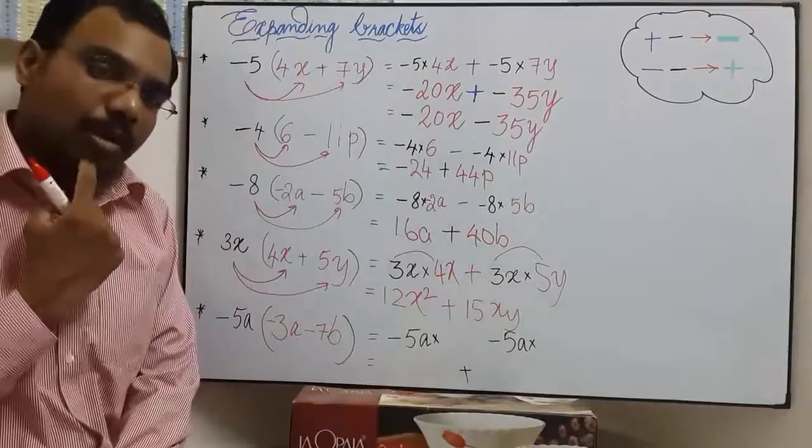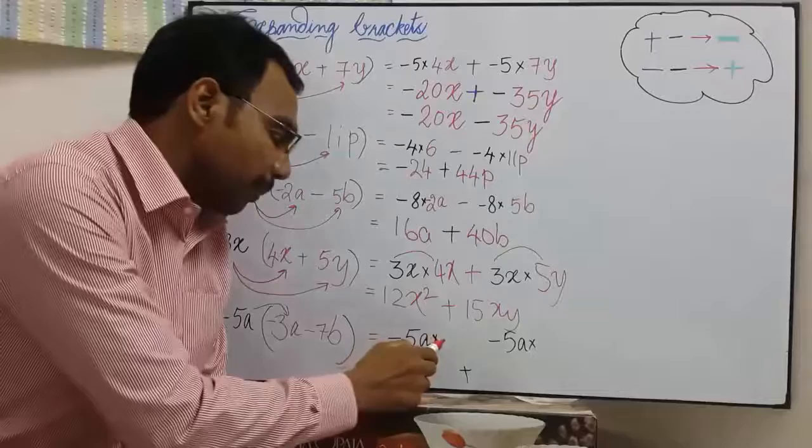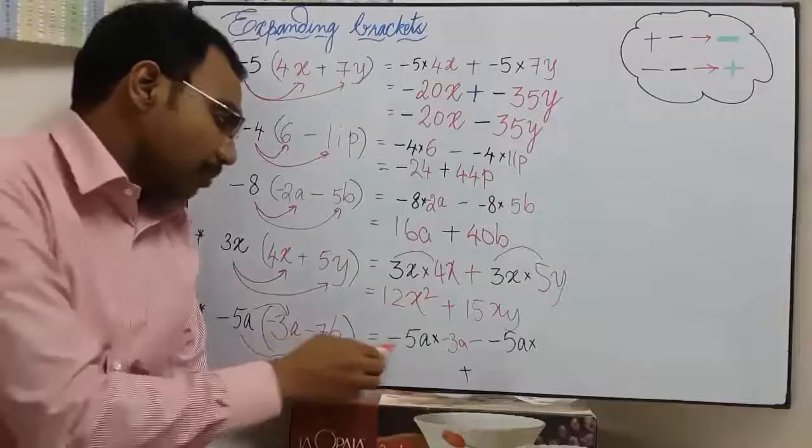Try this on your own. After this, I will give a solution. So minus 5a times minus 3a minus 7b. Terms are being subtracted, so minus comes over here.